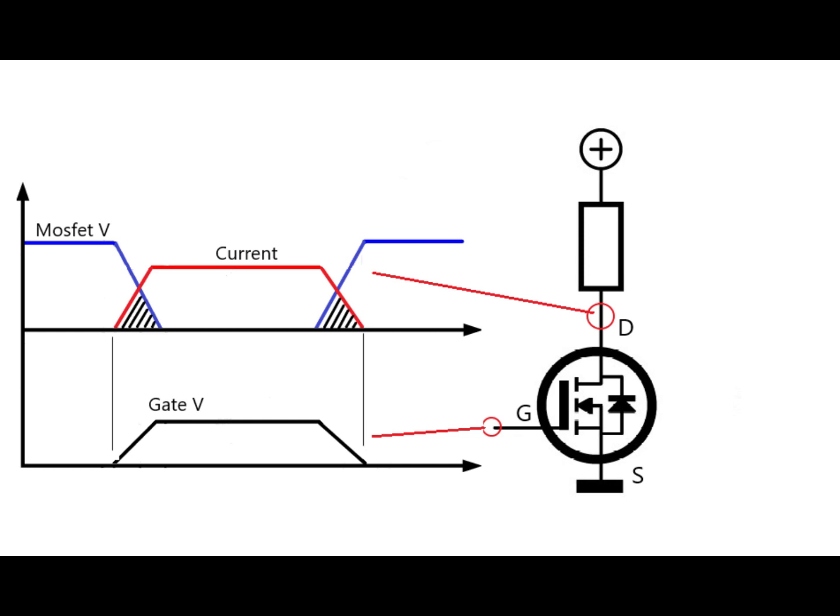When the switch is fully on in this region, the loss in the switch is usually fixed so there's not much we can do about it there. However, during the switching transition periods the losses can be reduced simply by making those transitions as fast as possible.